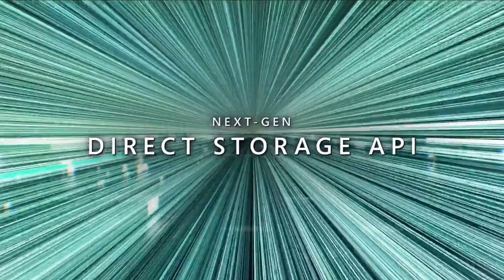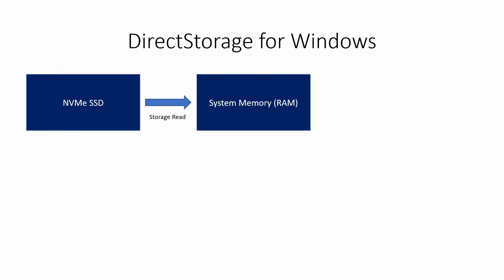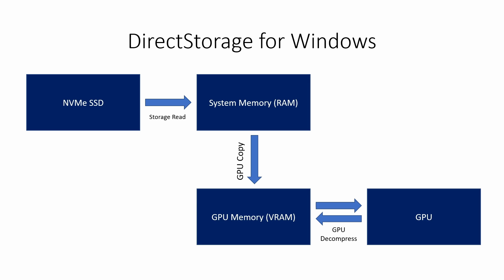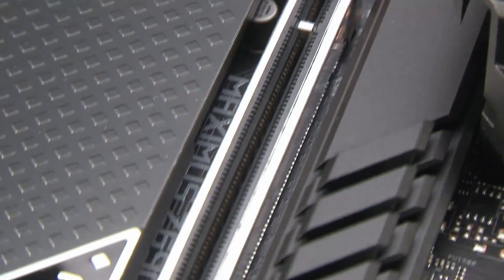One thing that will be utilizing the new PCIe 5.0 is Microsoft's new Direct Storage. Microsoft Direct Storage is a low-level storage API that can load game files much quicker, utilizing the GPU to decompress files and take advantage of the faster speed and bandwidth offered by NVMe and PCIe 5.0.